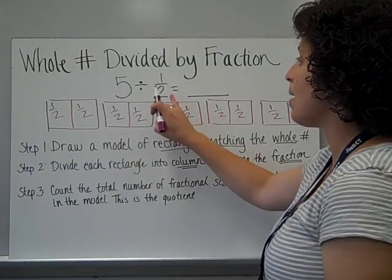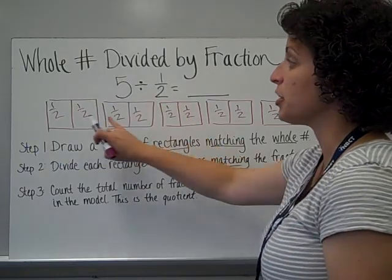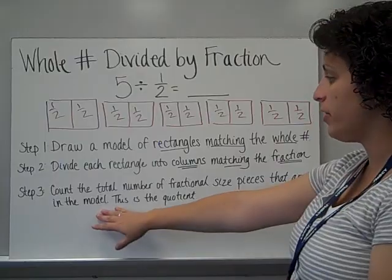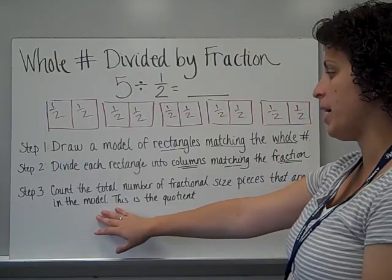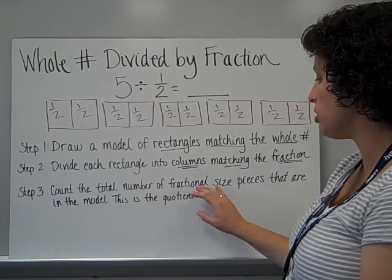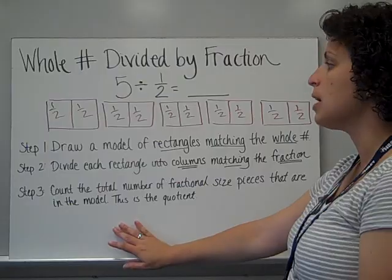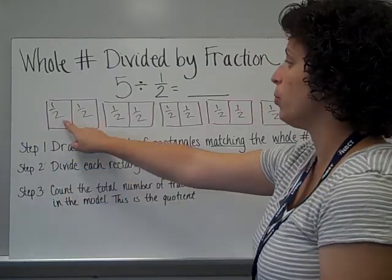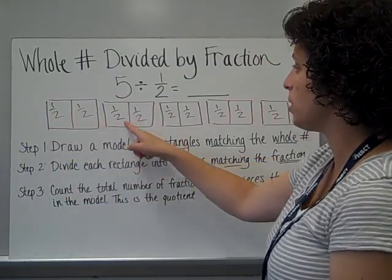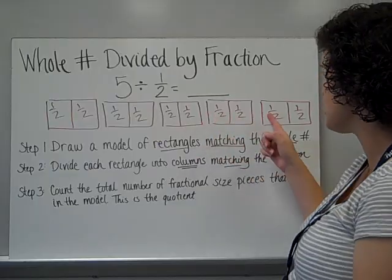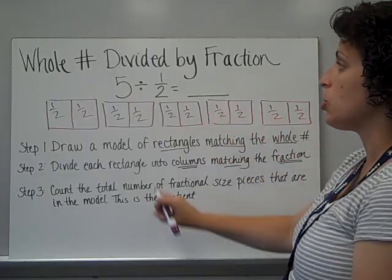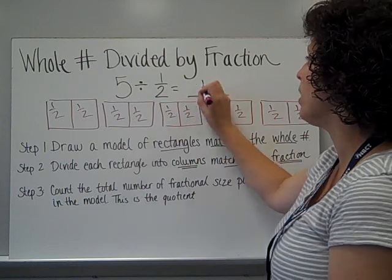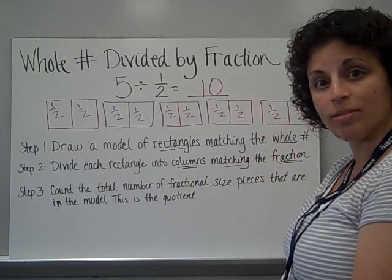What I'm finding is how many 1 halves there are in the 5 rectangles, and this is going to be my answer — my quotient. I count the total number of fractional-sized pieces in the model. So how many halves do I have? 1, 2, 3, 4, 5, 6, 7, 8, 9, 10. So the quotient for 5 divided by 1 half is 10.